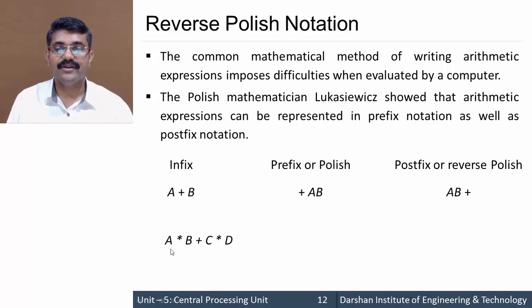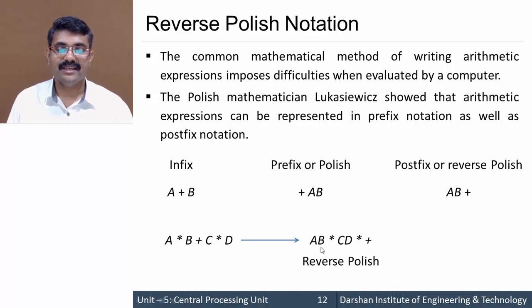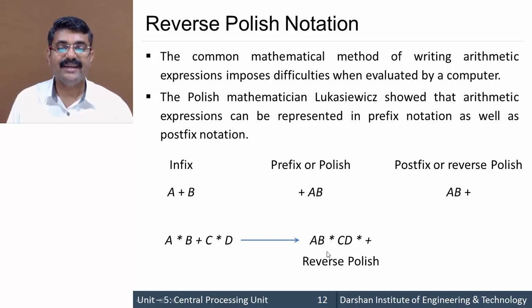For a more complex example: A * B + C * D. Following operator precedence, multiplication comes first. A * B becomes AB*, and C * D becomes CD*, and then the two results are added. So the full reverse Polish notation expression is AB*CD*+. This means A and B are multiplied first, C and D are multiplied second, and then the two results are added.